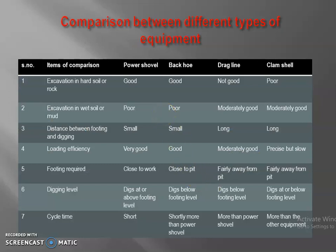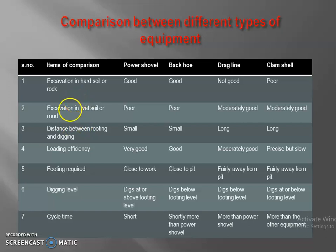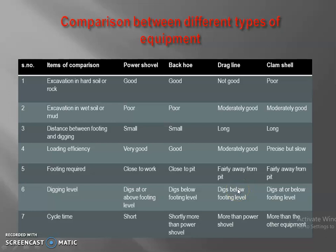This is the comparison chart between the different types of earth moving equipments we have seen — power shovel, backhoe, dragline, and clamshell. The comparison covers whether each is suitable for harder soil or rock, whether wet soil can be handled or only dry, what about the digging, loading efficiency, footing, whether the digging level is below or above the footing level, and how far it can travel. Based on these factors, a comparison is made so you can find out which equipment is best suited for your site. Thank you.